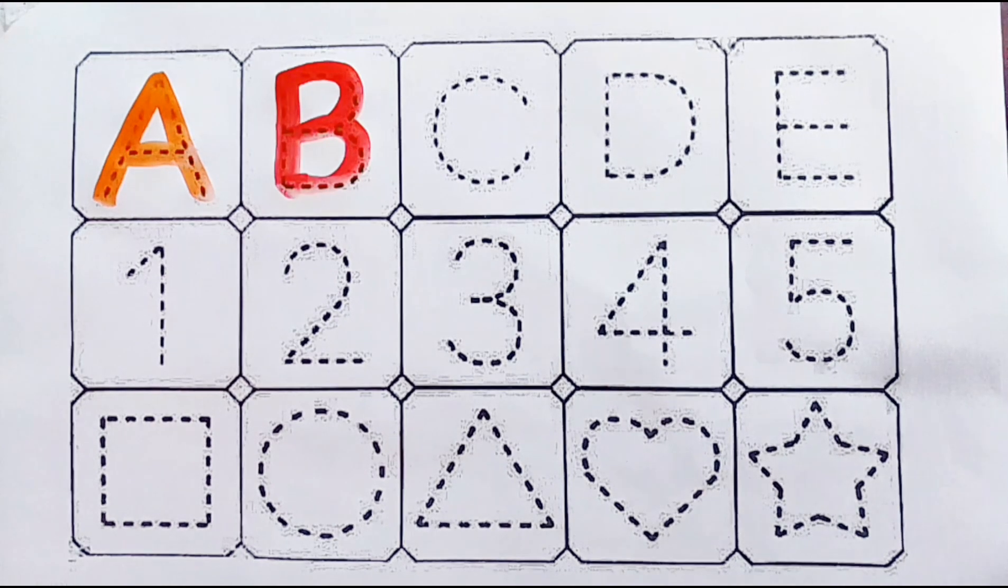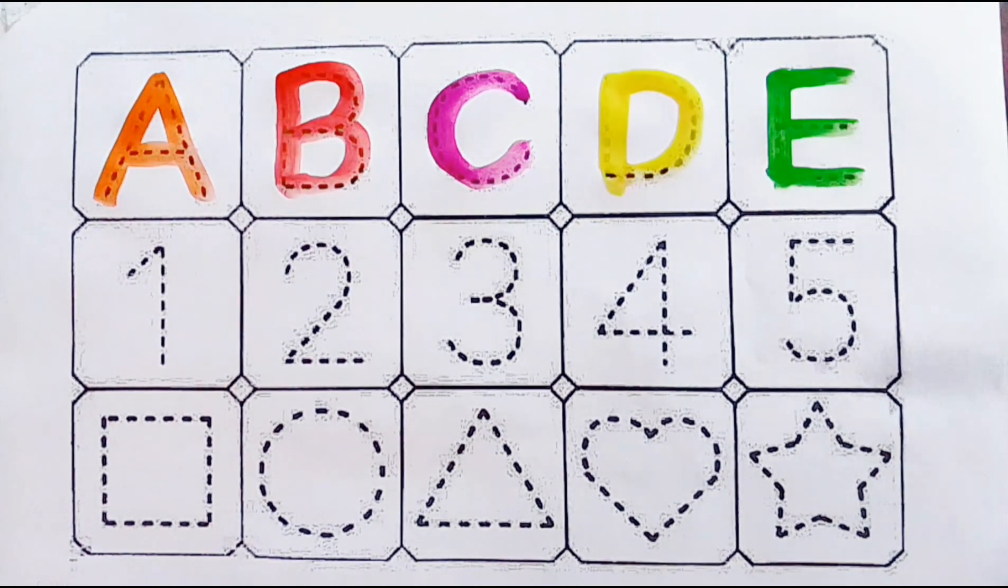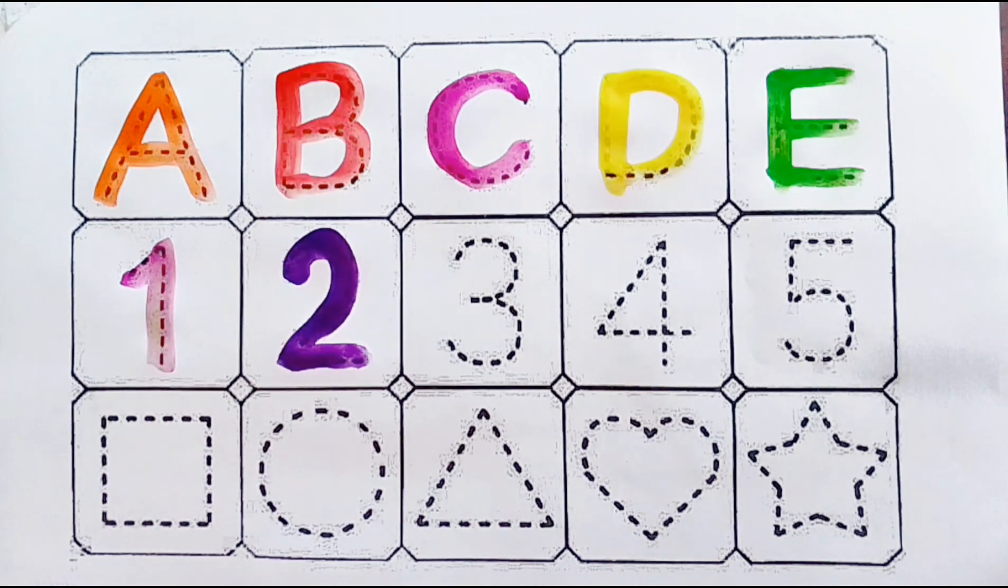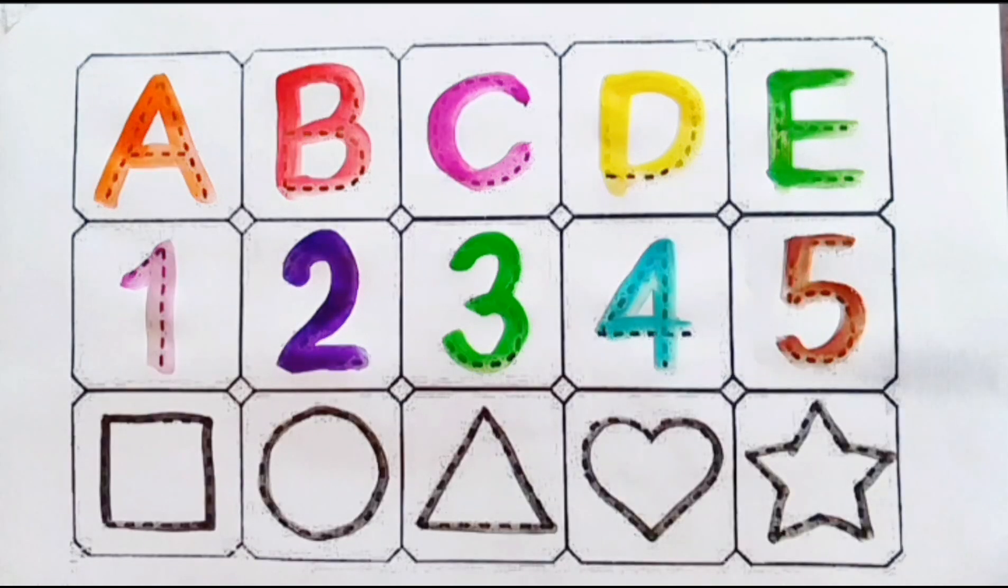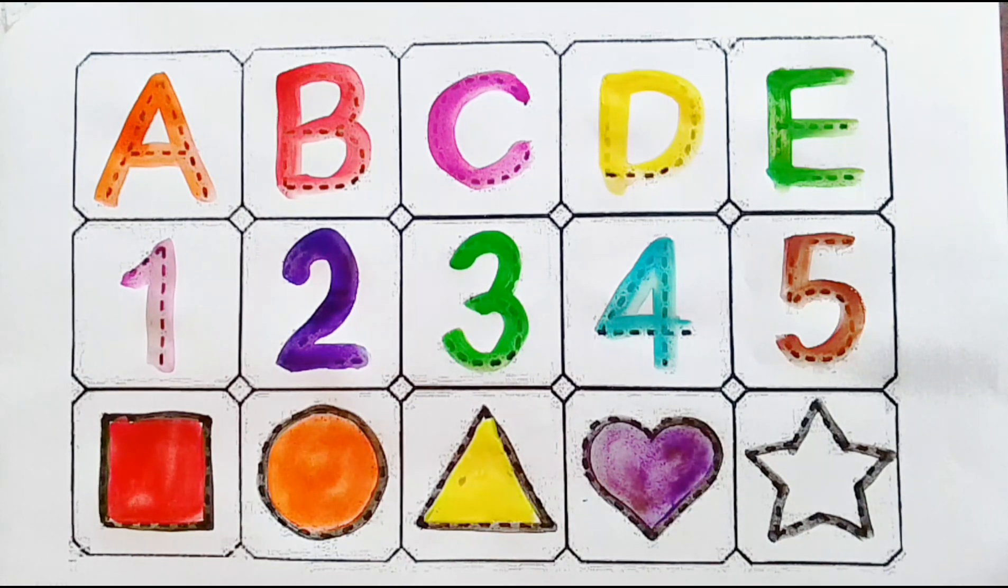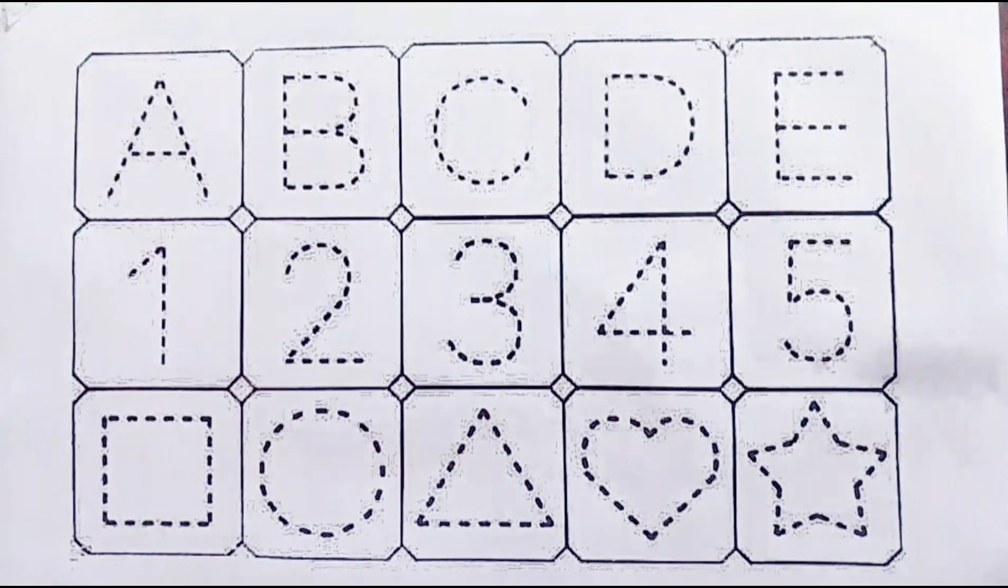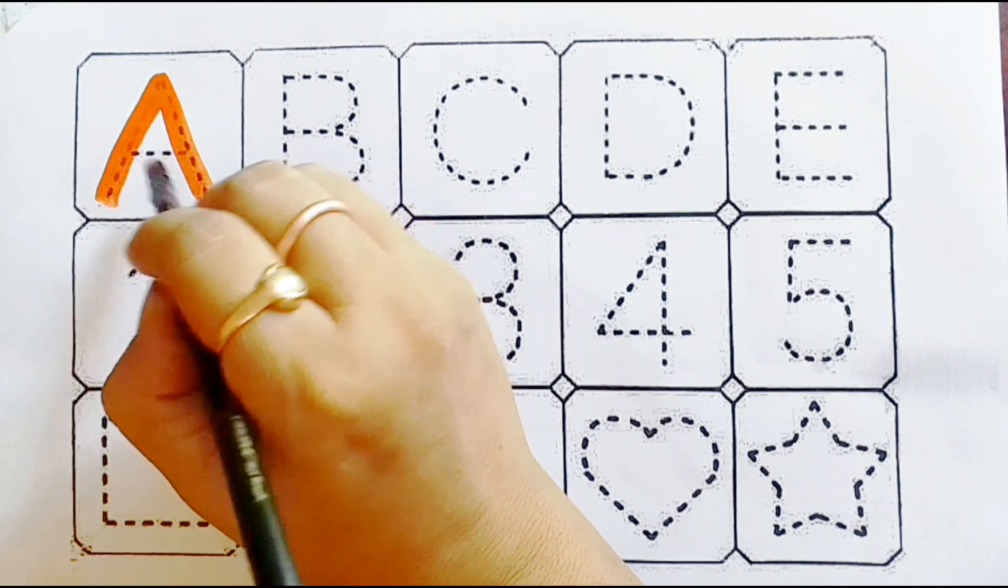Alphabets. Numbers. 2D shapes. T, U, V, W, X, Y, and Z. Now I know my ABCs. Next time won't you sing with me.